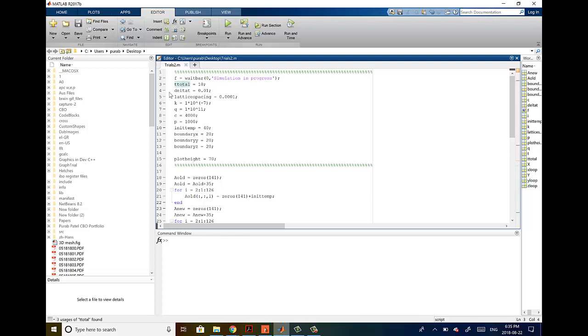T_total is the total time that we're going to be simulating up to, and I've set that to 10 seconds. Delta T is the time spacing, so we do calculations every 0.01 seconds. Lattice spacing is the distance between points on the lattice. In this example, it's going to be the same distance in all three directions, and that's going to be 0.0001 meters. K is the thermal diffusivity.